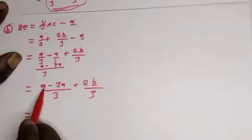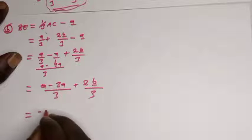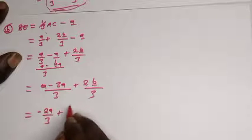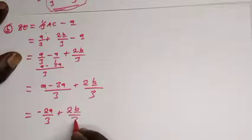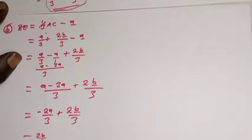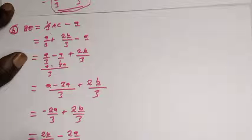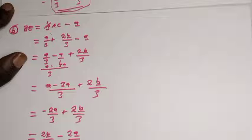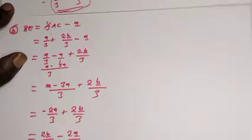So we have -2a/3 + 2b/3. We can factorize: taking 2/3 as common factor gives BE = (2/3)(b - a), which is the final answer for vector BE.